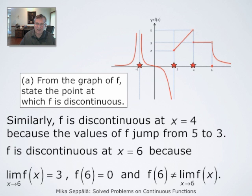The point x = 6 is yet another discontinuity because at that point the function f does have a limit — that limit is apparently 3 — but the value of the function at x = 6 is 0, as indicated by the dot on the x-axis at x = 6. Therefore, this function f has four discontinuities: x = -1, x = 2, x = 4, and x = 6.